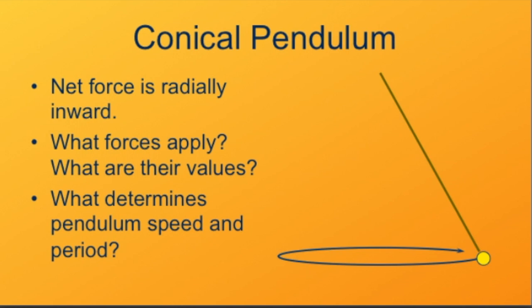What determines the pendulum's speed and period? We might expect a number of things. We might expect that the mass of the pendulum makes a difference, the length of the pendulum makes a difference, or that the angle at which it spins makes a difference. We'd have to actually analyze it to find out how much of this is true.